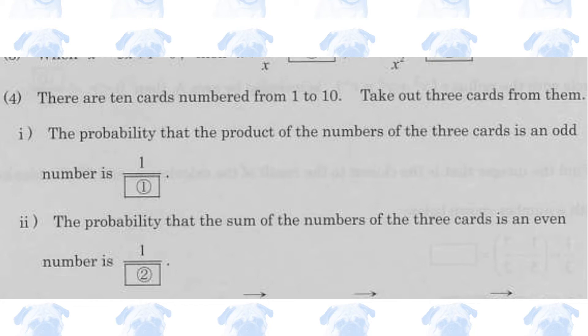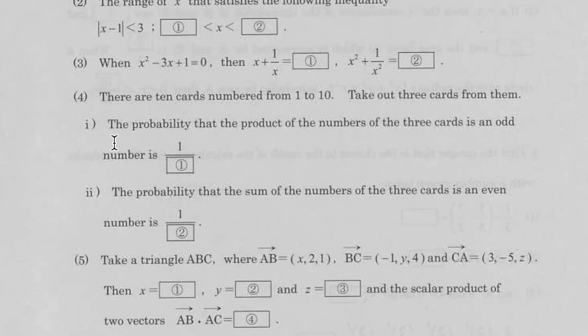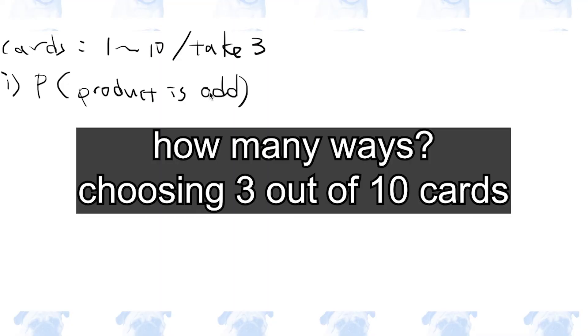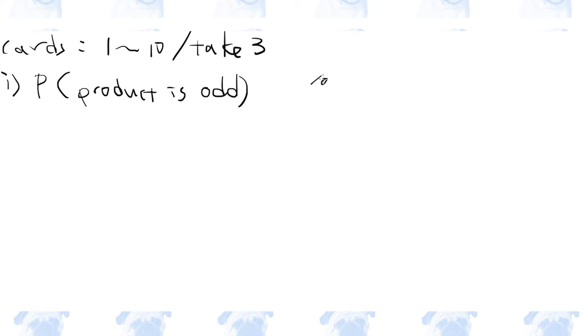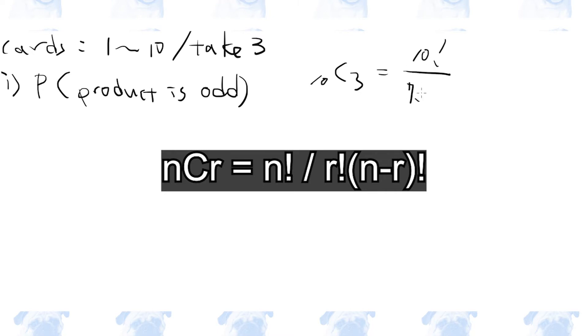Number 4. We have cards with numbers printed on them ranging from 1 to 10, and we are taking 3 cards out of 10. The first part asks: what is the probability that the product of the numbers of the 3 cards is an odd number? Let's calculate the number of ways we can take 3 cards out of 10. This is 10 choose 3, which is 10 factorial over 7 factorial times 3 factorial.